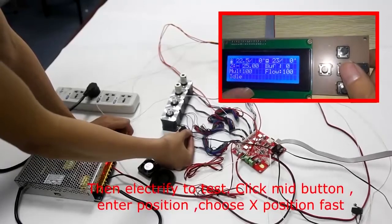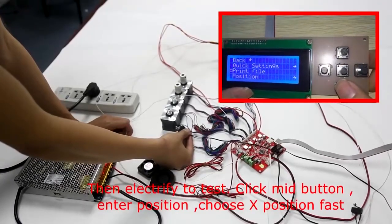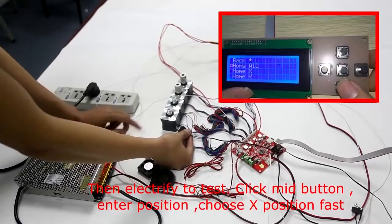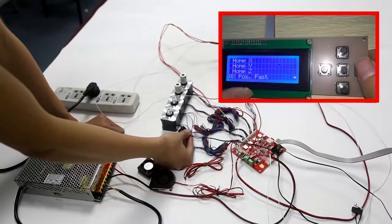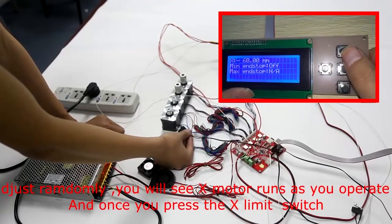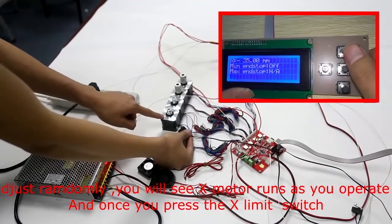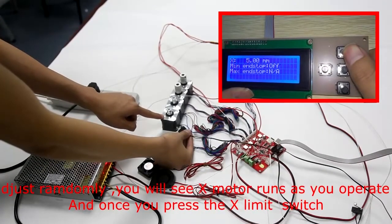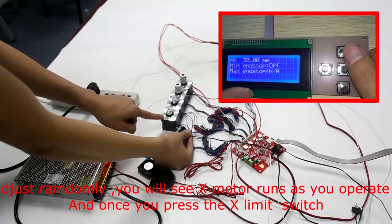Then, electrify to test. Click the middle button to enter position. Choose X position. Adjust the control. You will see the X motor runs as you operate. And once you press the X limit switch, it stops.